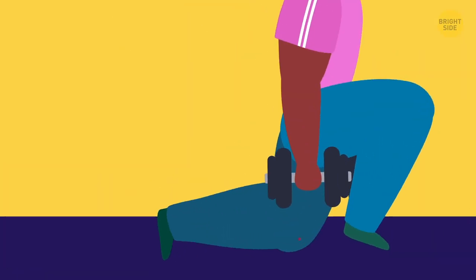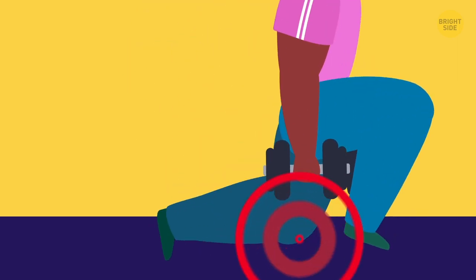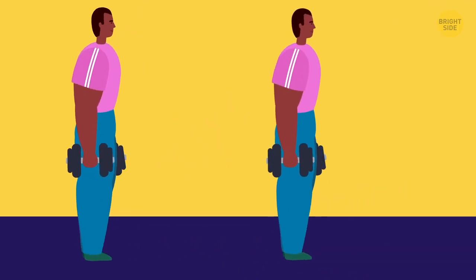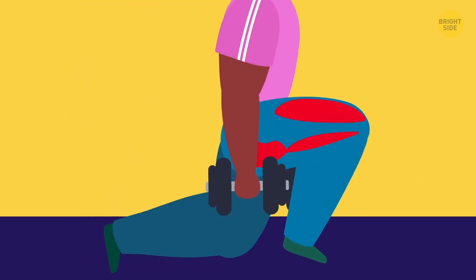If you notice that your knee touches the ground every time you do a lunge, something has definitely gone wrong. It's okay if it happens once or twice, but otherwise, it'll take all the tension off your legs, and all your effort will be wasted. In the worst case, you can hurt your knee.